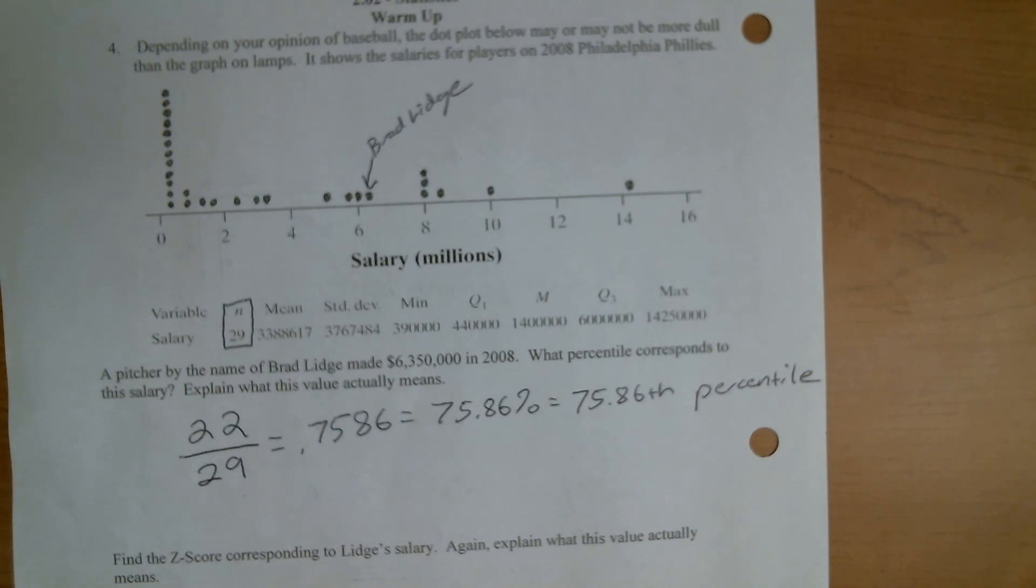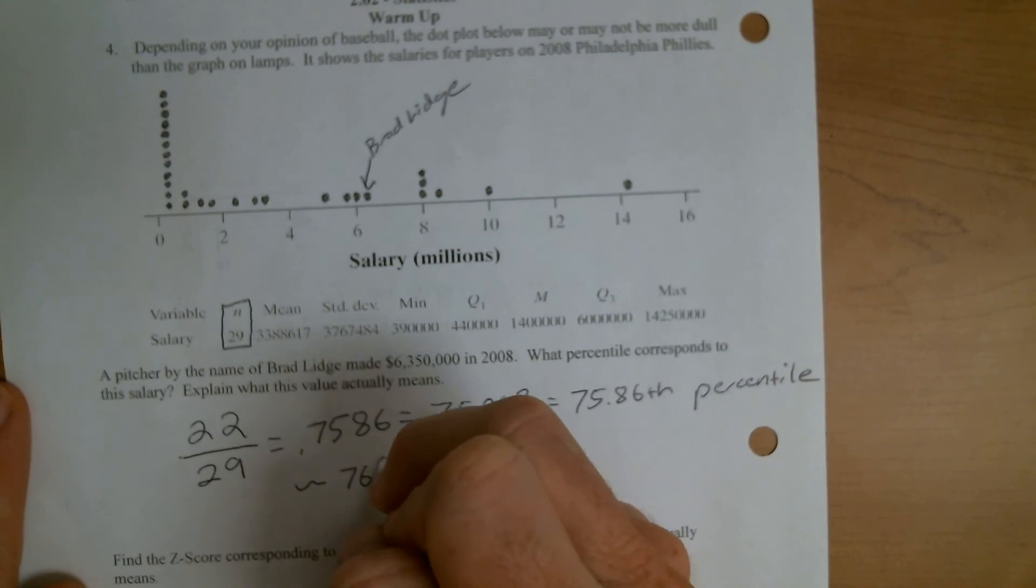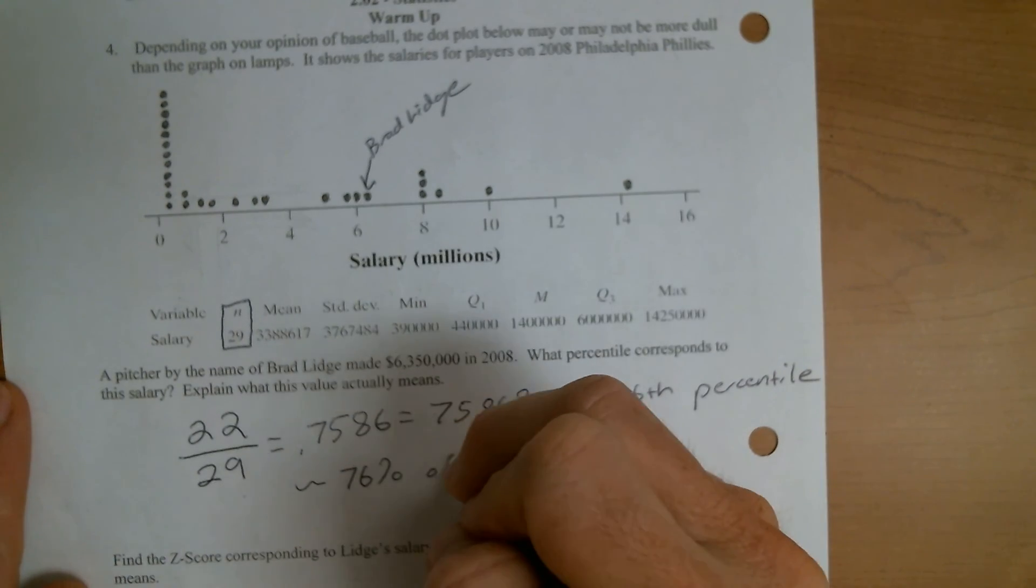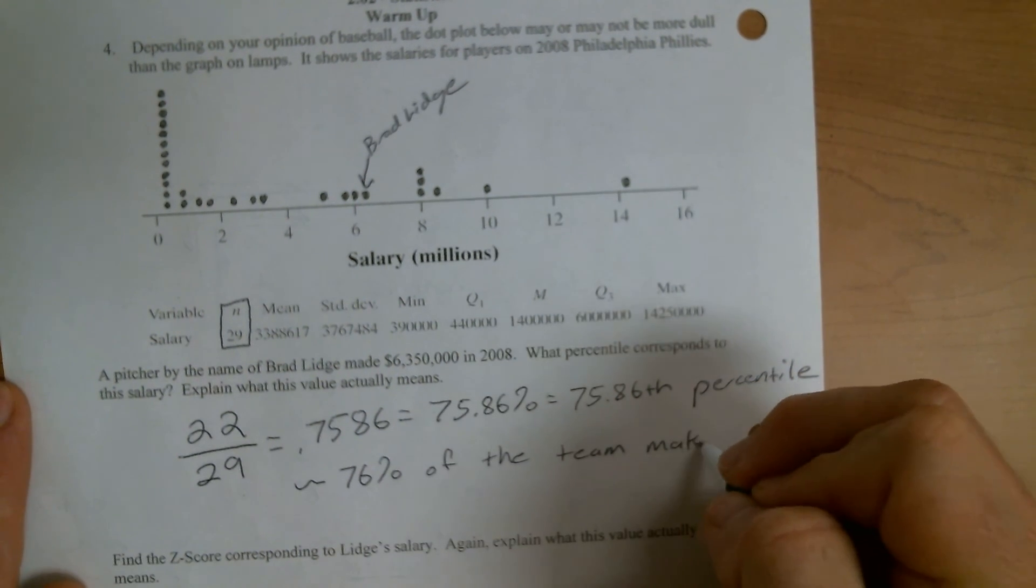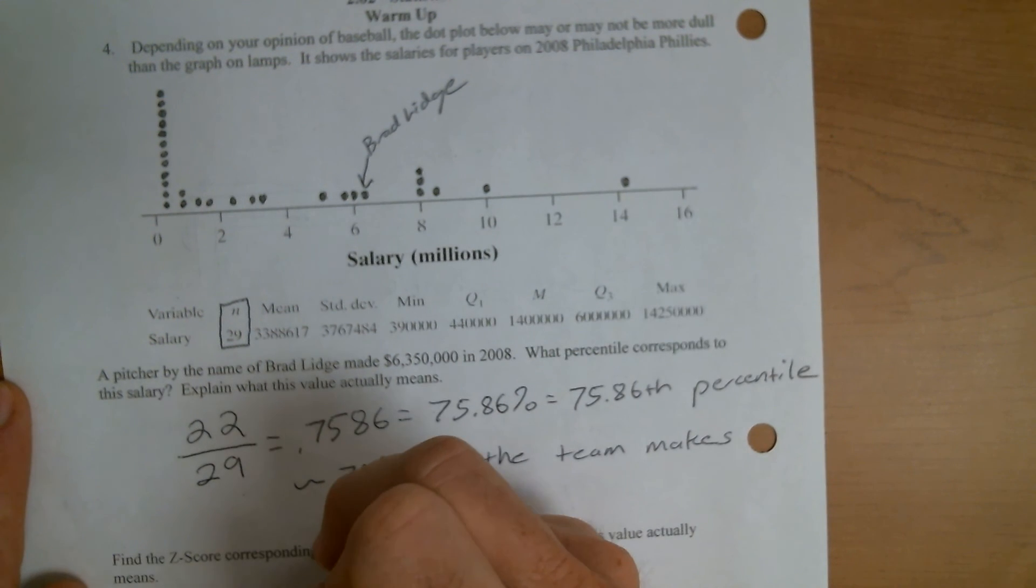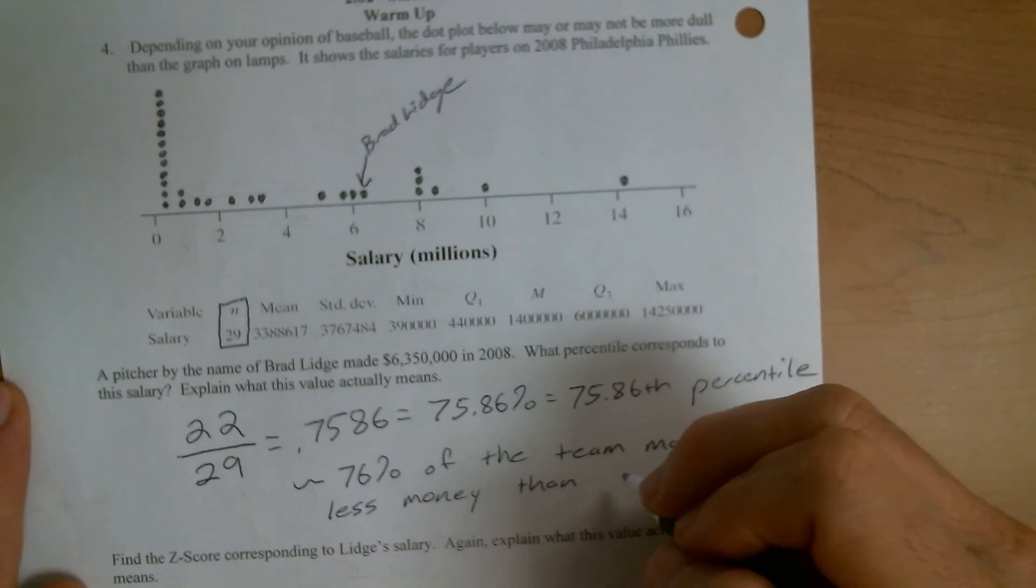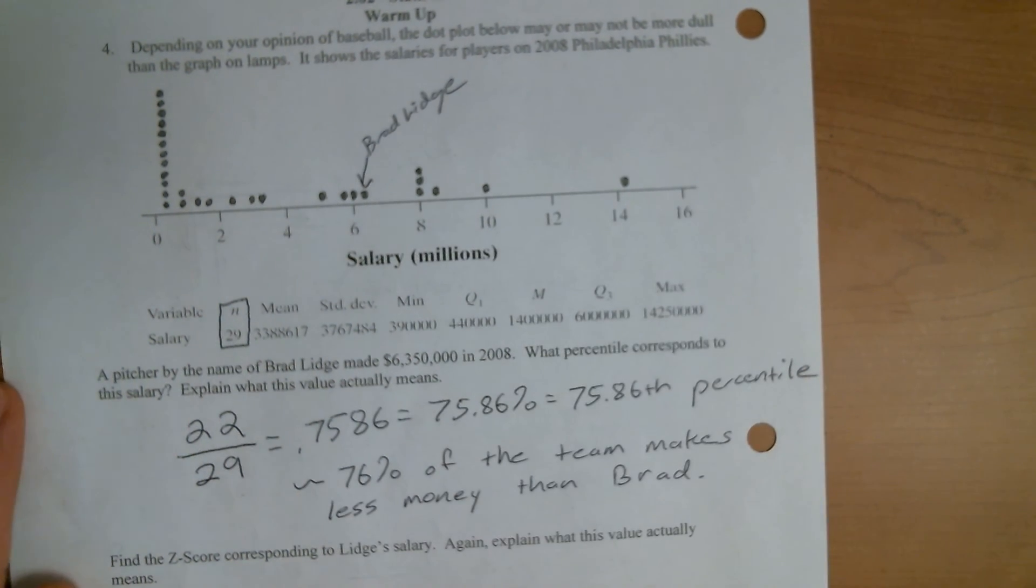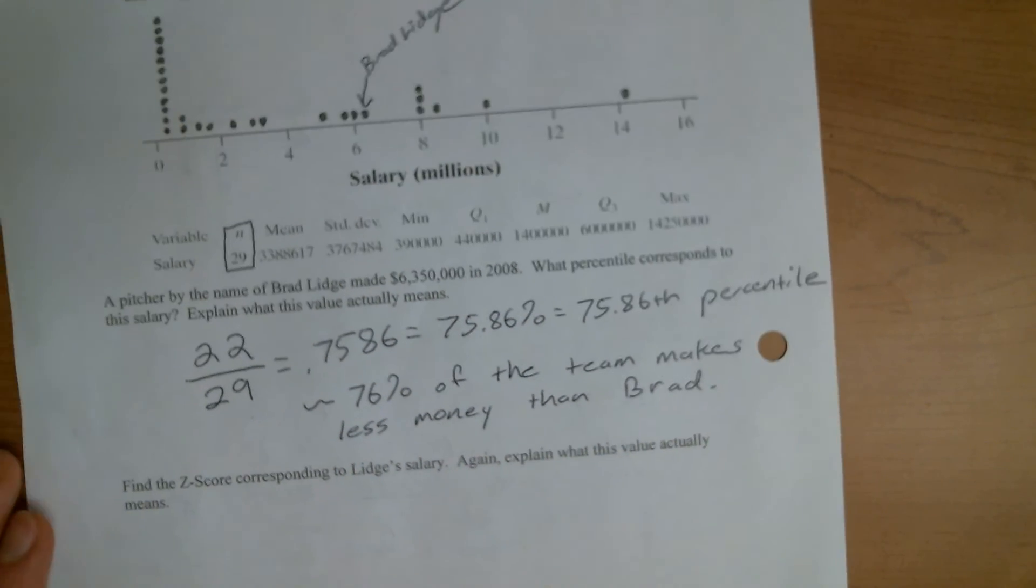What does that mean? It means that roughly 76 percent of the team makes less money than Brad. That's the percentile. So it's the percent below the observation. So again, it's knowing that definition and then knowing that you don't count that dot as part of your calculation.